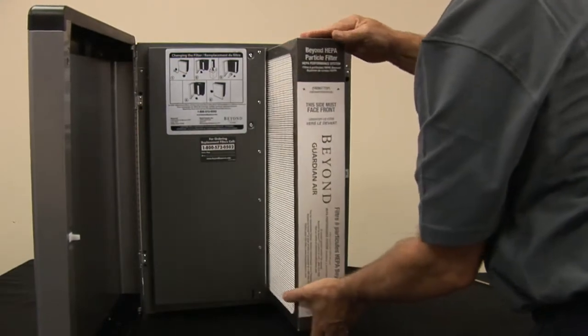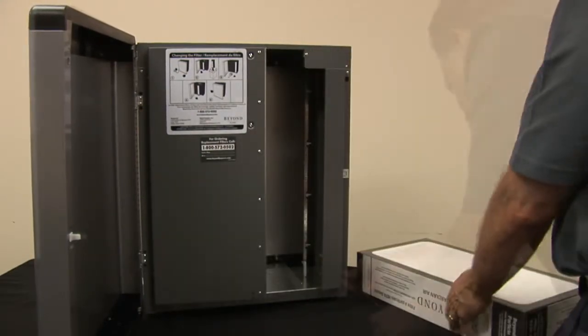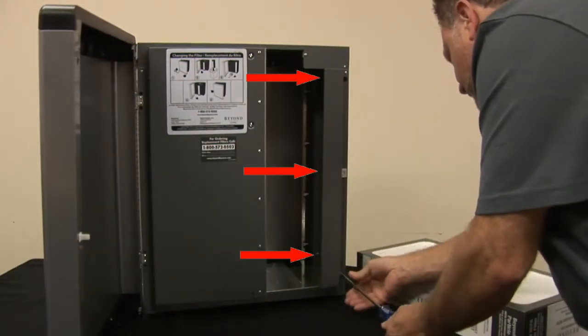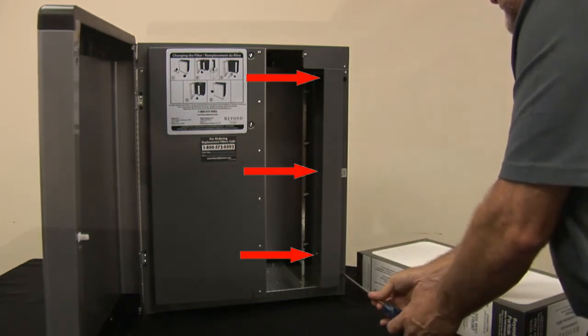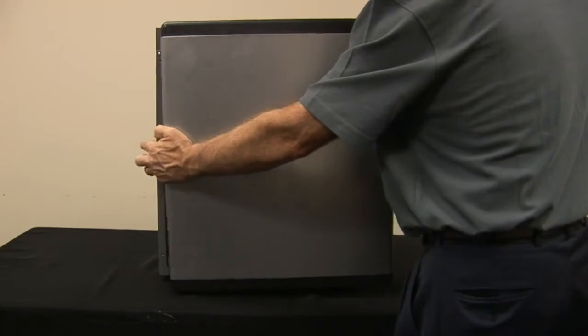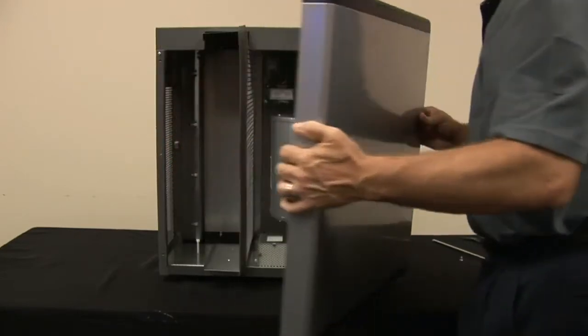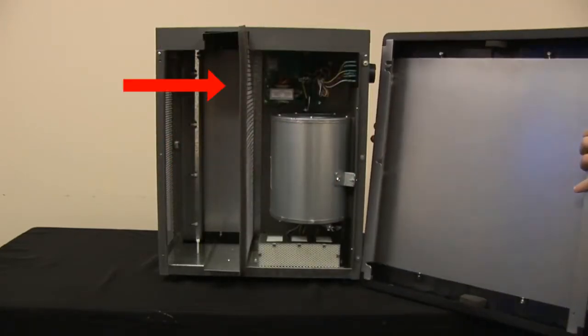Begin by opening the filter access door to remove the filter. Next, using the long shaft screwdriver, remove the three screws holding the fixed door panel in place. Remove the fixed door panel by pulling out slightly on the left side, then sliding to the right.